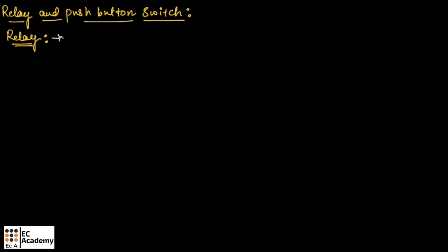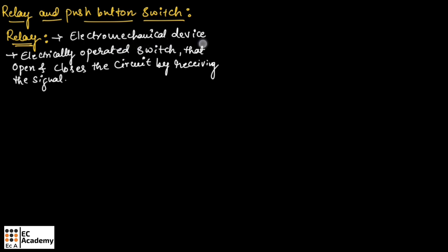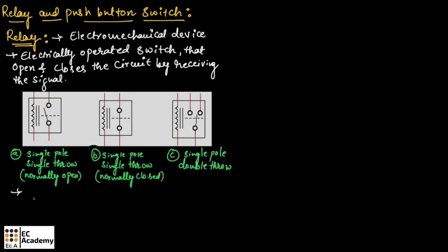A relay is an electromechanical device and it is an electrically operated switch that opens and closes the circuit by receiving a signal. Whenever it receives the signal, it can either open the circuit or close the circuit for flow of signal.